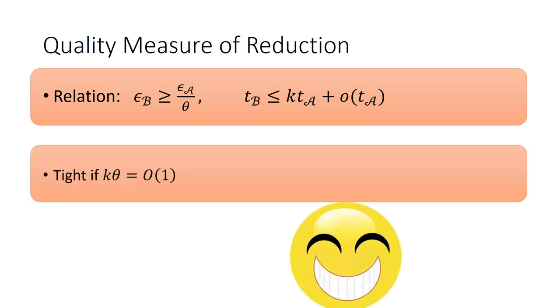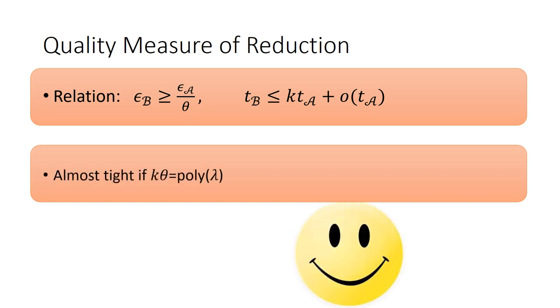In particular, the crypto scheme is considered to be tight if k theta equals constant, almost tight if k theta equals a small polynomial of the security parameter, which is independent of the adversary.